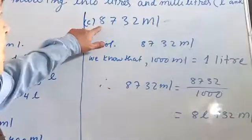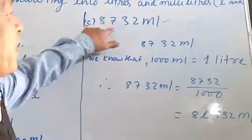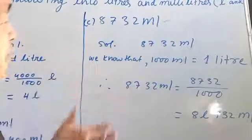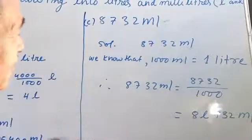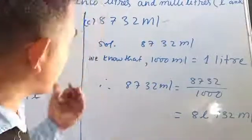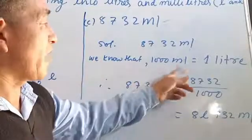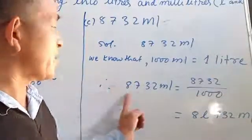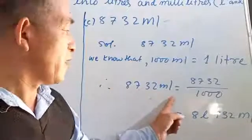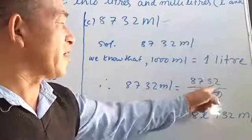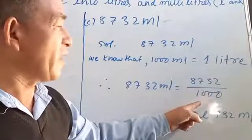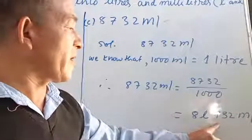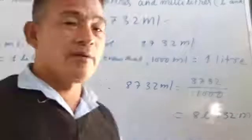Now we have question number C: 8732 milliliters. The same procedure, same method, same technique will be used here. We know that 1000 ml is equal to 1 liter. Therefore, 8732 milliliters will be 8732 divided by 1000, giving you 8 liters 732 milliliters.